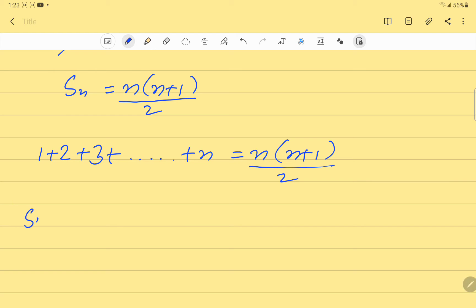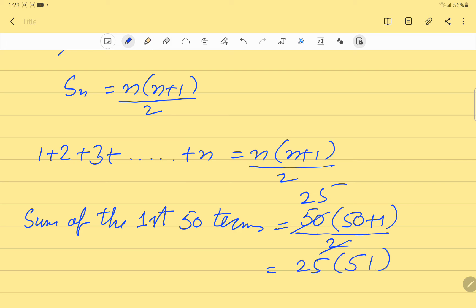Sum of the first 50 terms. We replace n with 50, giving 50(50+1)/2. The 2 cancels with 50, so it is 25 times 51.